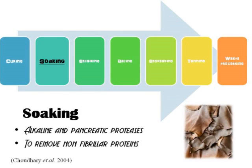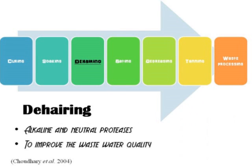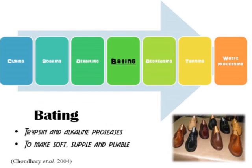Once cured, the skins are soaked in water for several hours to several days. Water and surfactants help in the removal of salt, dirt, debris, blood, and excess animal fats. Rehydration is also reintroduced. In the next stage, alkaline and neutral proteases are involved to improve wastewater quality. Trypsin and alkaline proteases in baiting complete the deliming process by eliminating residues and loosening skin fibers to achieve soft and flexible leather.